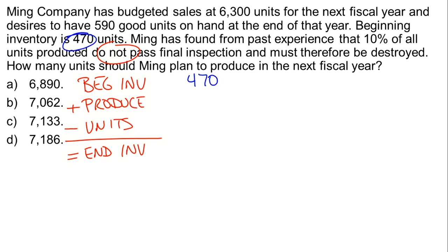They've given us three of the numbers. They've told us that the beginning inventory is 470 units, that we desire to have 590 units in ending inventory, and that we have budgeted sales of 6,300 units for the upcoming year. So what we end up with here is a nice little formula: 470 plus X minus 6,300 equals 590. This just becomes solving for X.